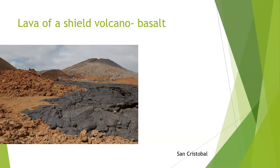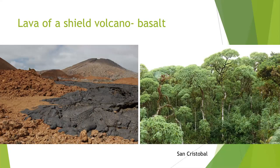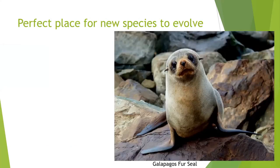And when that lava cools, it makes this black rock called basalt. If there's a lot of acid present, that basalt can rust into more of a red color. So on one of the younger islands you have barren terrain, whereas on one of the older islands, you can have a forest — that is a perfect place to find new species.